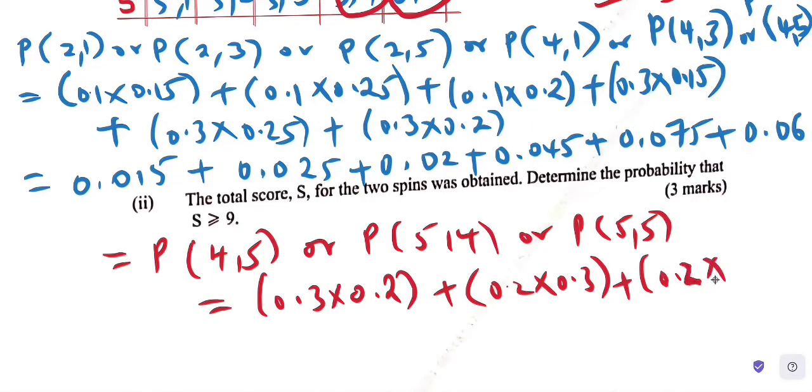Which is: (4,5) is 0.3 times 0.2, plus (5,4) is 0.2 times 0.3, plus (5,5) is 0.2 times 0.2. This gives 0.06 plus 0.06 plus 0.04, which equals 0.16.